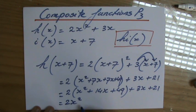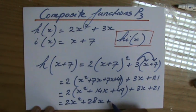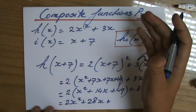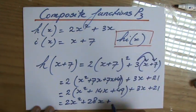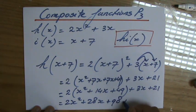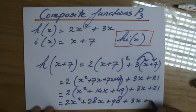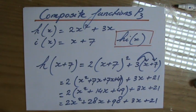Which is 2x squared plus 28x. 49 times 2, now you can do 50 times 2 minus 2, indeed, that is 98, plus 3x plus 21.